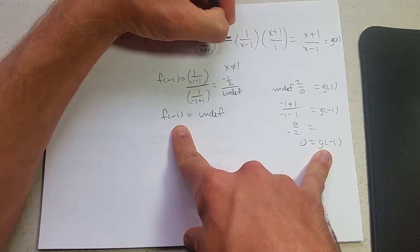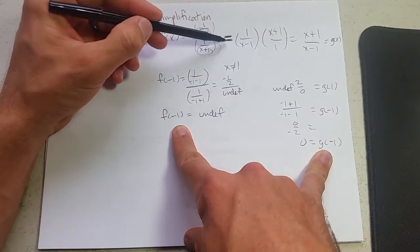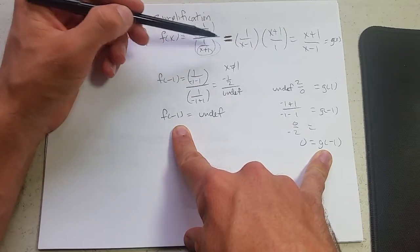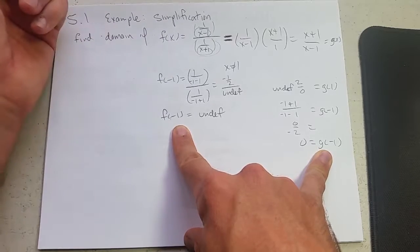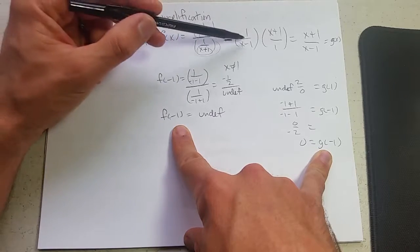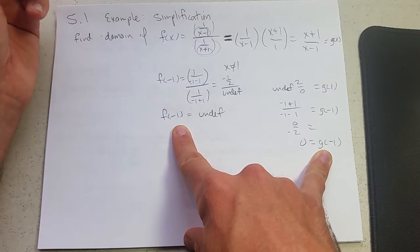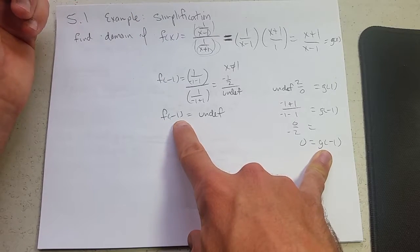What happened? This equals sign right here that I just darkened, this is equal for any x value except negative one. So when you simplify, a lot of times we lose information, and we lost the fact that f cannot eat negative one.